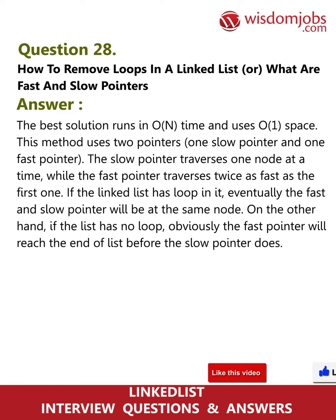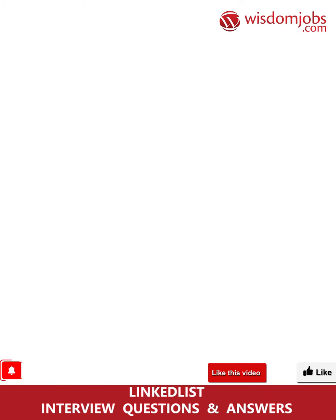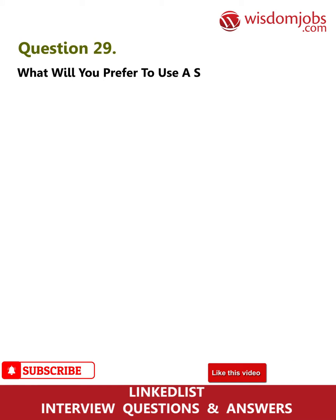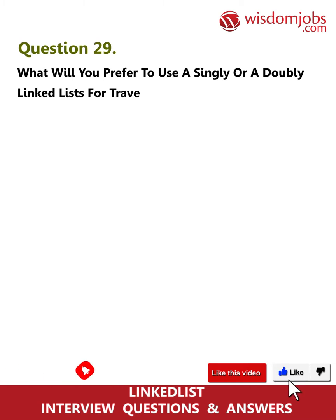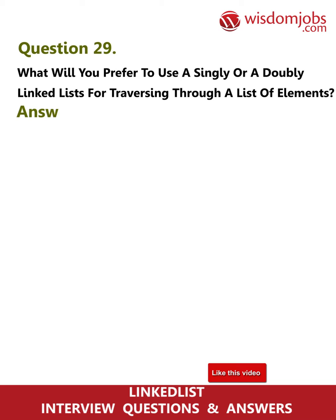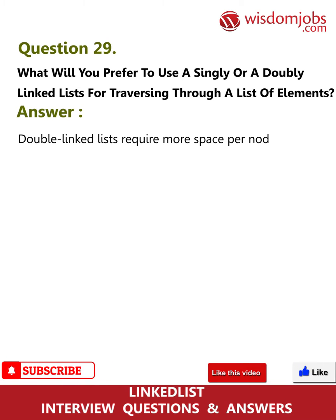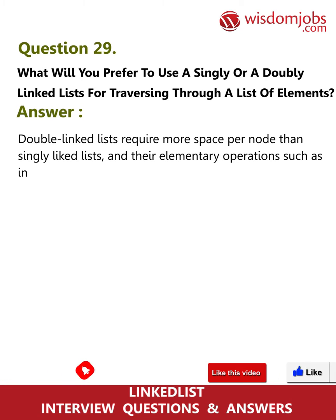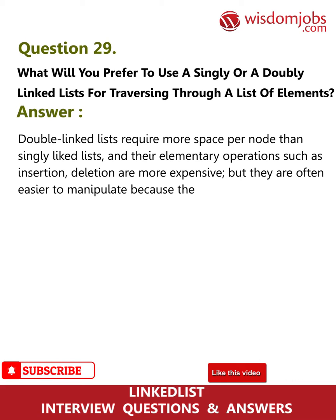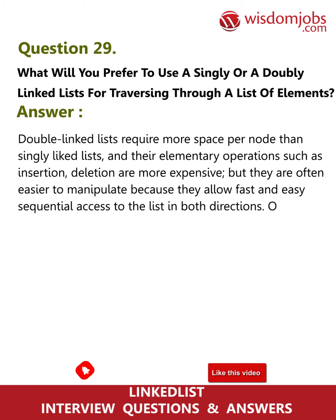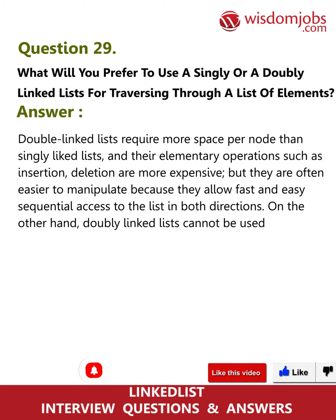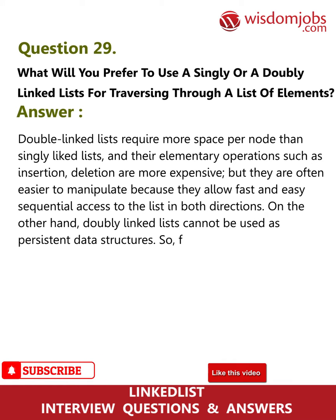Question 29: What will you prefer — a singly or doubly linked list for traversing through a list of elements? Doubly linked lists require more space per node than singly linked lists, and their elementary operations such as insertion and deletion are more expensive. However, they are often easier to manipulate because they allow fast and easy sequential access in both directions. Doubly linked lists cannot be used as persistent data structures, but for traversal, a doubly linked list would be the better choice.